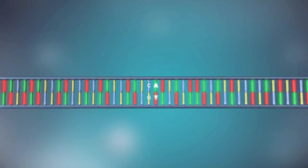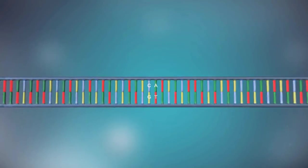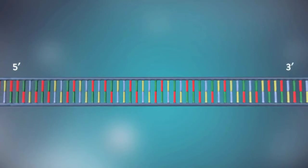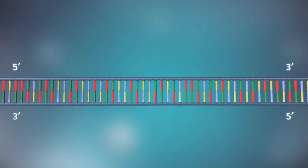Each strand has a five prime end and a three prime end. The two strands run in opposite directions. This determines how each strand of DNA is replicated.